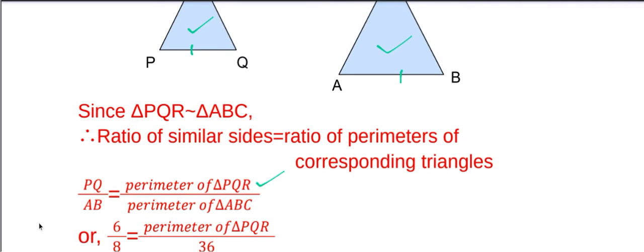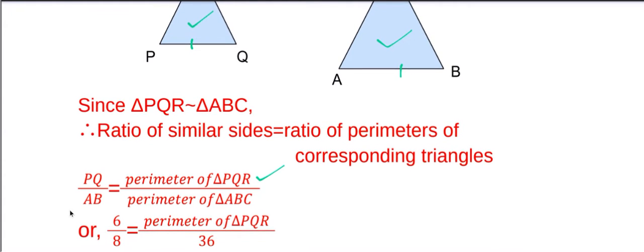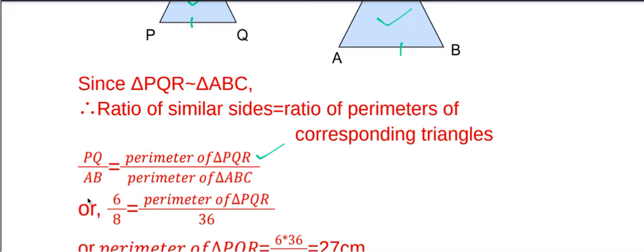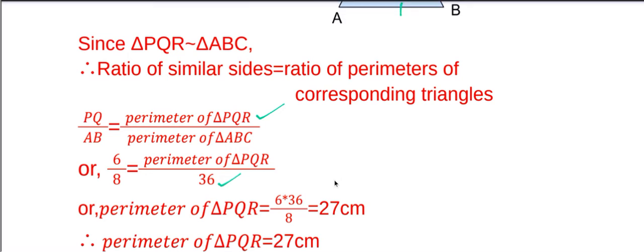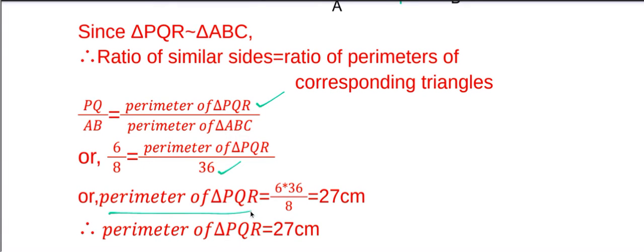Now we will put the value of PQ and perimeter of triangle ABC. So PQ is 6 cm, AB is 8 and perimeter of triangle ABC is 36 cm. Now simplifying, perimeter of triangle PQR will be equal to 6 into 36 divided by 8.